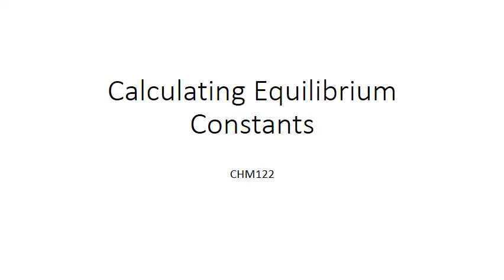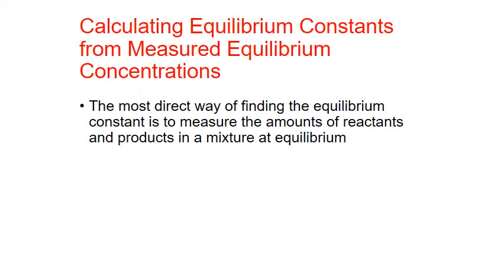In this PowerPoint we're going to review how the values of K, our equilibrium constants, are calculated. The most direct way of finding the equilibrium constant is to measure the amounts of all the reactants and all the products in a mixture at equilibrium. These concentrations can then be substituted into the equilibrium expression to calculate K.